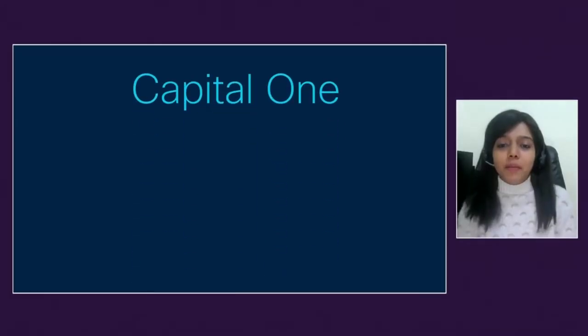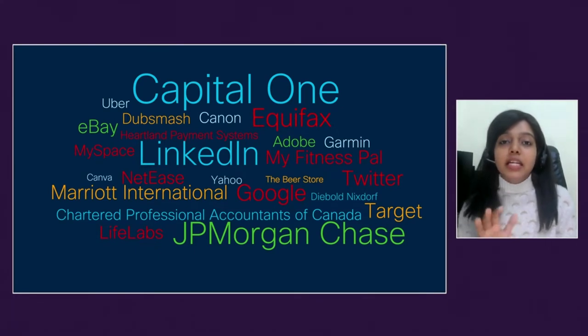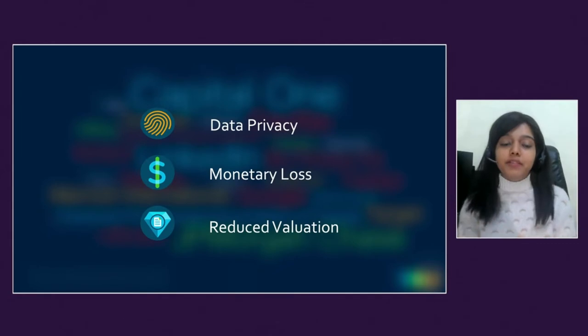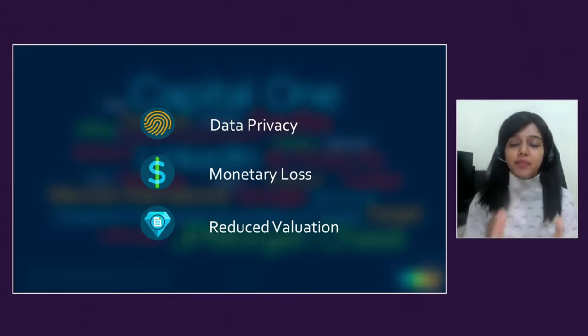During this pandemic period, many organizations around the world have faced security breaches. Companies like Capital One, Equifax, LinkedIn, and many others have had major security threats or vulnerabilities in their networks. The key point is that most of these breaches happen in the production network, resulting in reduced valuation, data privacy loss, and monetary loss. We all agree that security is critically important, and we need something that can bring trust to our day-to-day transactions, technologies, and devices.